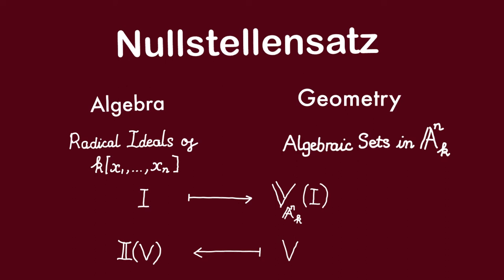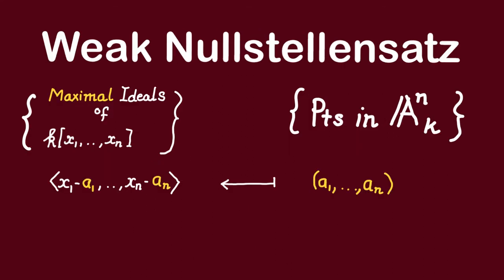The Nullstellensatz gives us a dictionary between algebra and geometry. It allows us to think of algebraic sets inside the affine space as ideals of the polynomial rings. We'll discuss the full Nullstellensatz in the next video, but in this video, let us just focus on the weak Nullstellensatz.